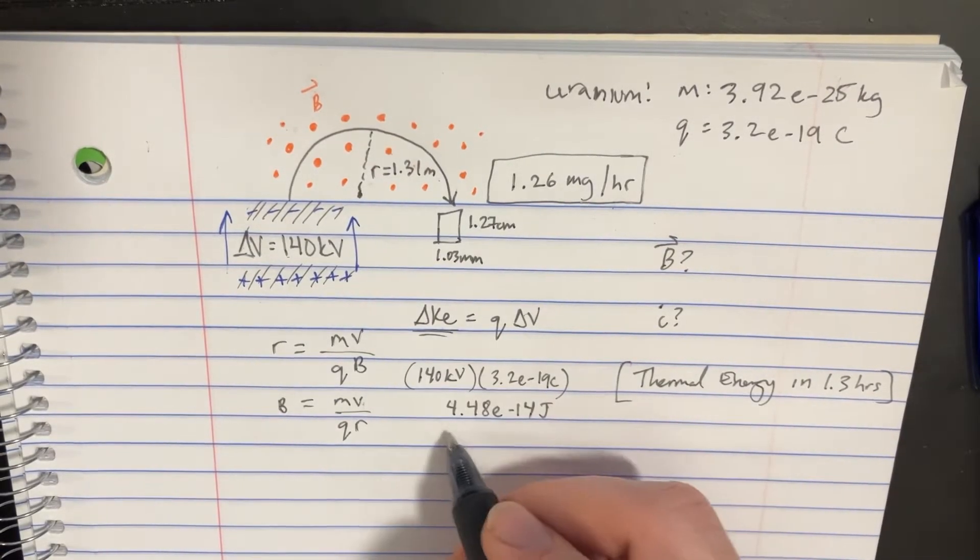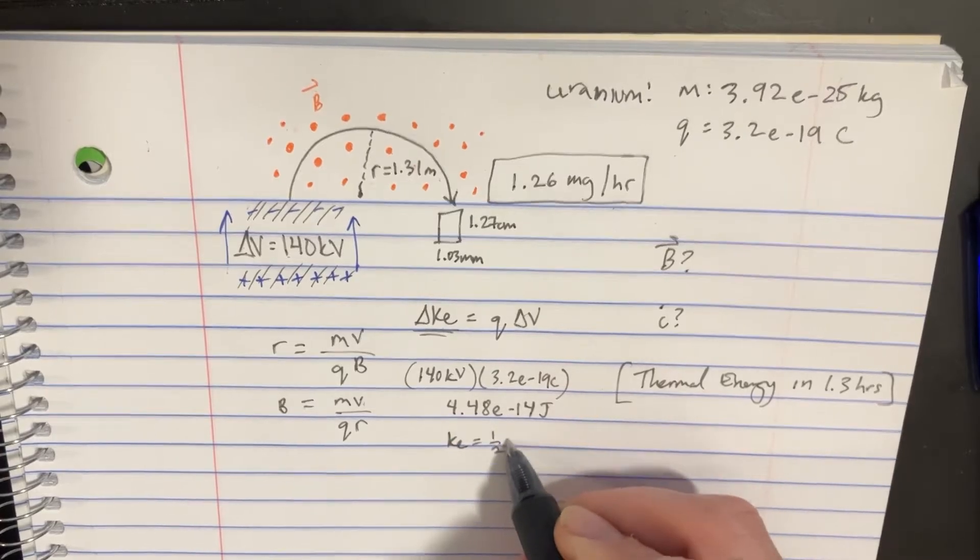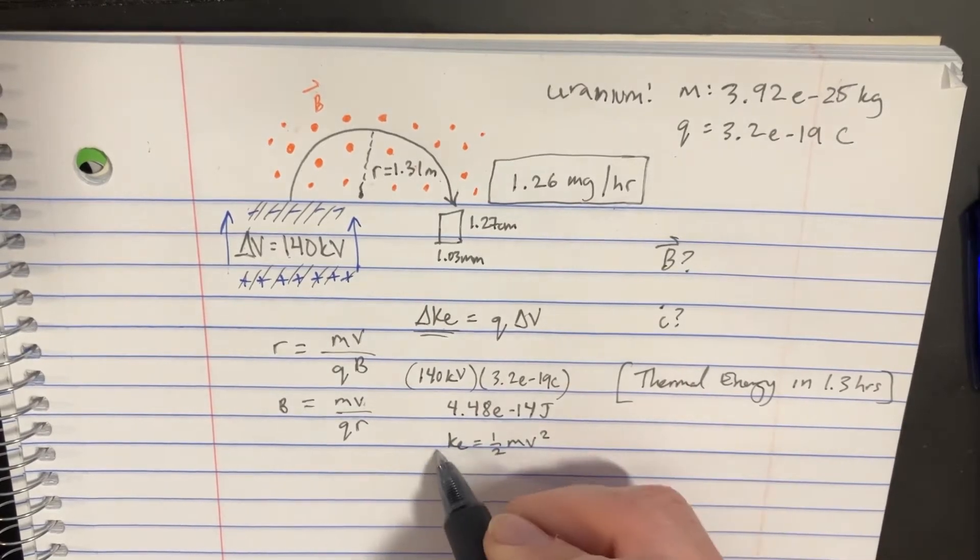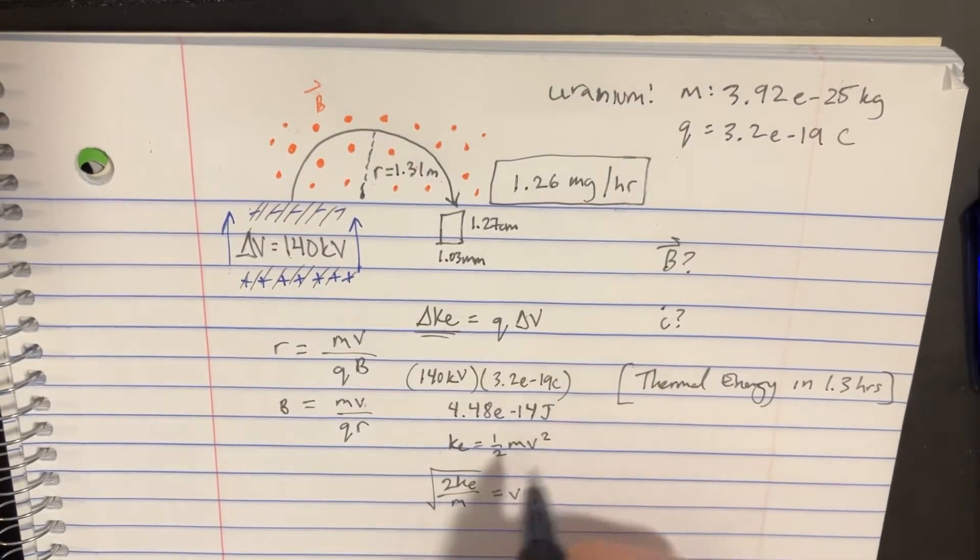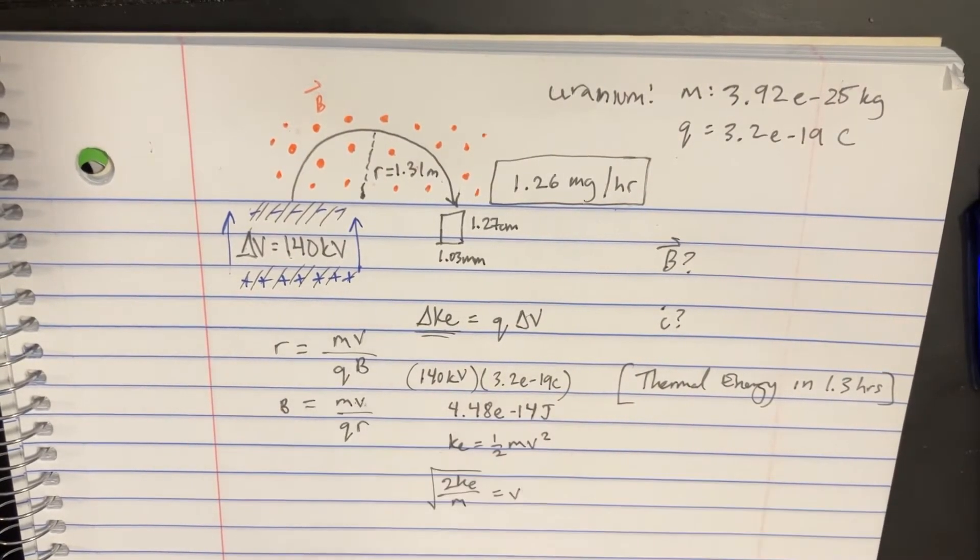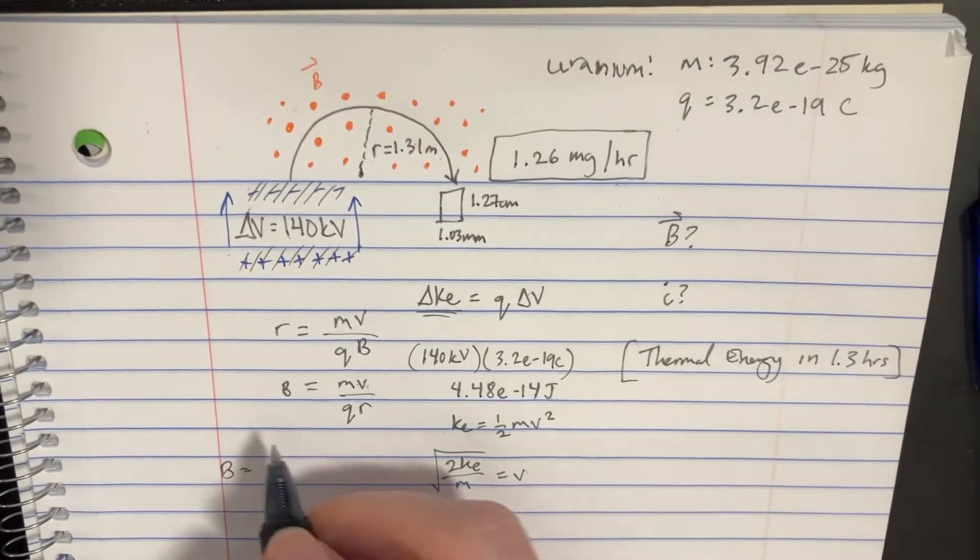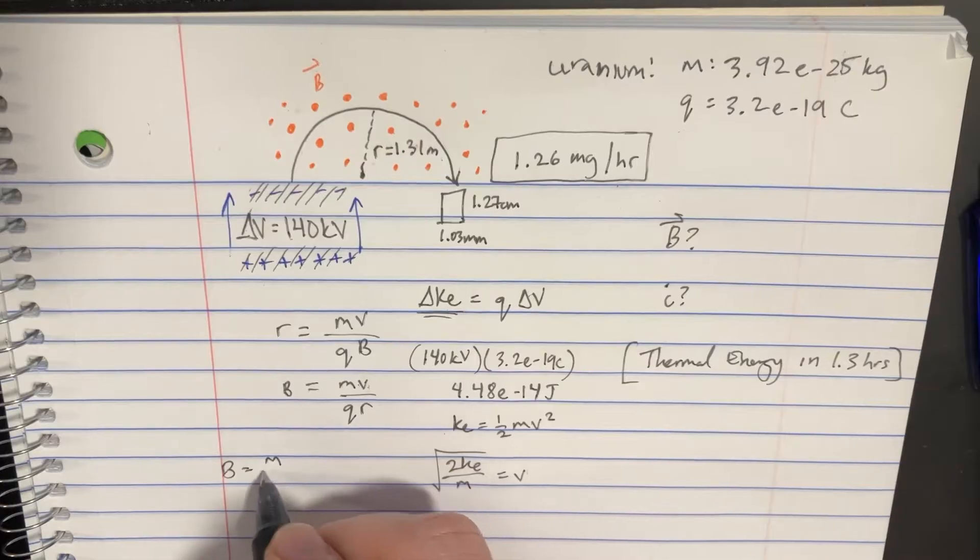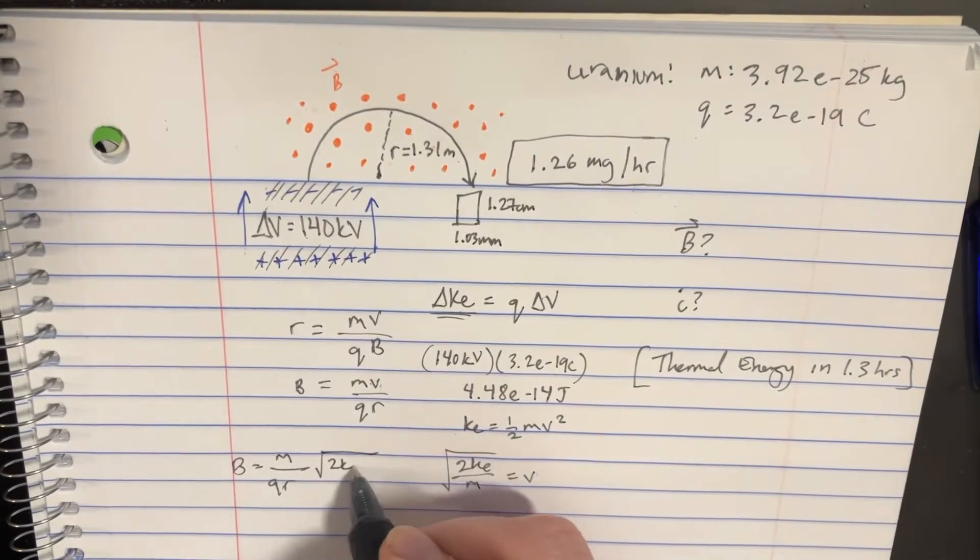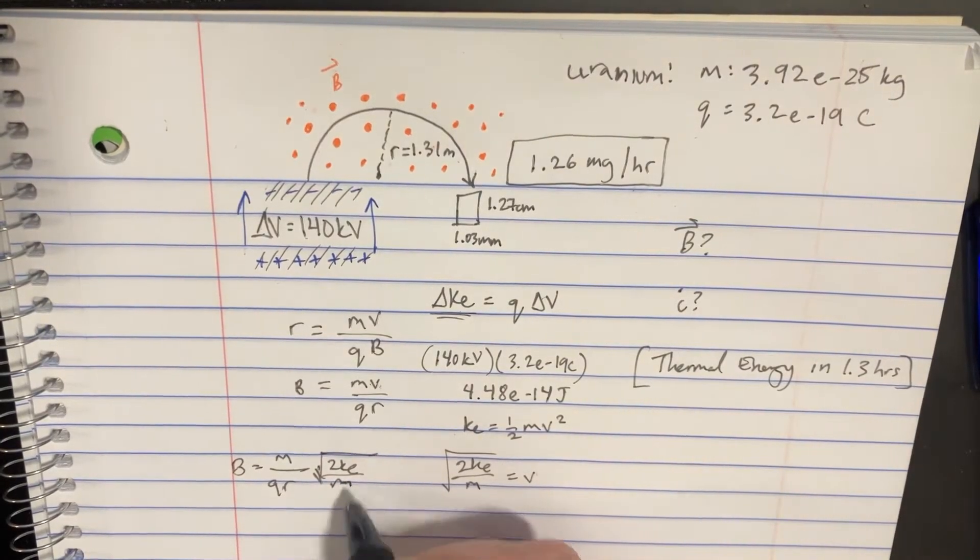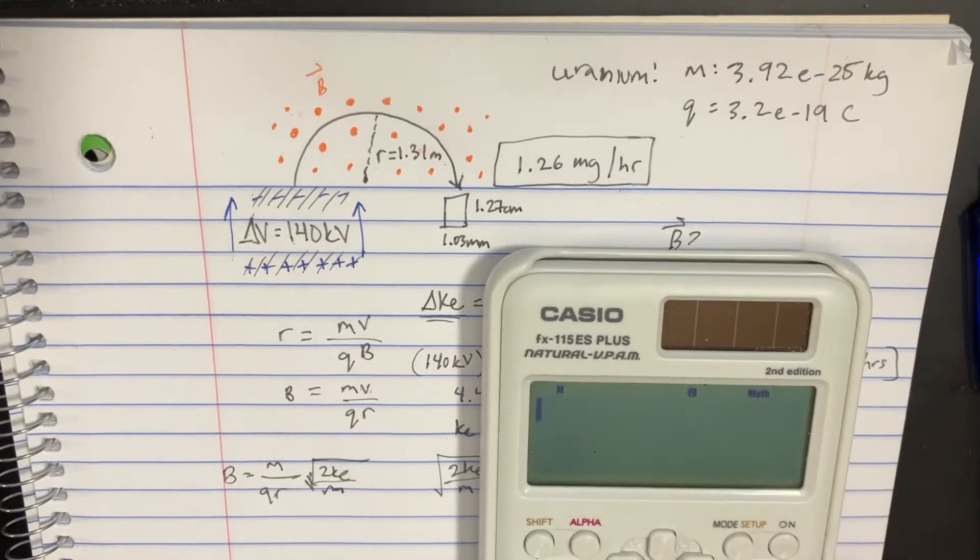If we're going to rearrange this equation we can say that k equals one half mv squared so 2 ke divided by m square root is equal to velocity. That's what we can plug in. We can say that b equals m divided by qr and then there's this whole square root of 2 ke over m situation and then we'll be able to figure out what the magnetic field is.